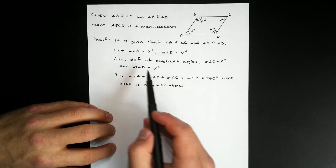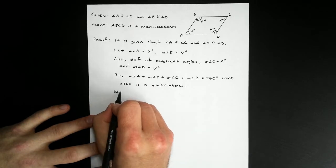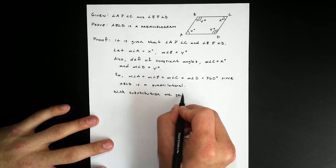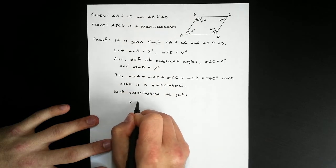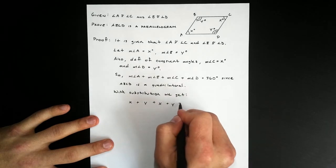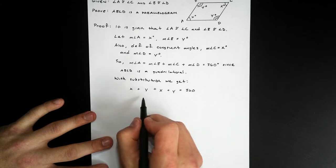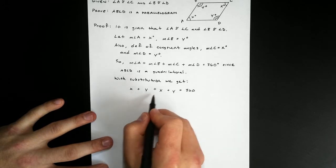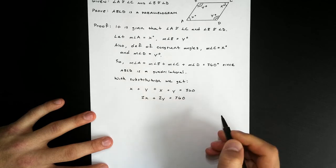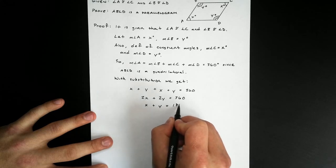So now I have this equation and I have some variables that represent each of these, so I'm going to do some substitution. A was X, B was Y, C was X, and D was Y — and that's equal to 360. We have some like terms we can combine together, so doing some algebra: X and X is 2X, Y and Y gives 2Y, and that equals 360. Then dividing everything by 2, we end up with X plus Y equals 180.